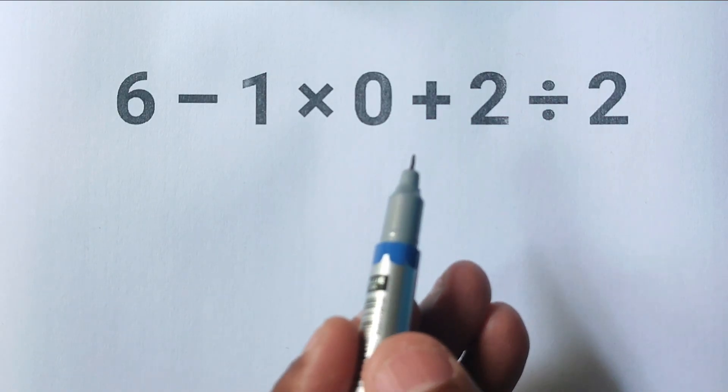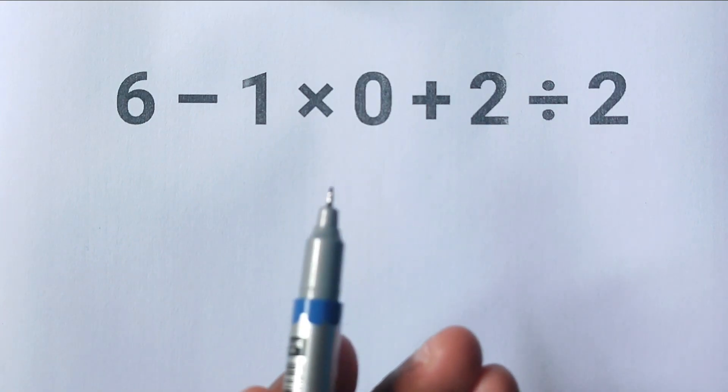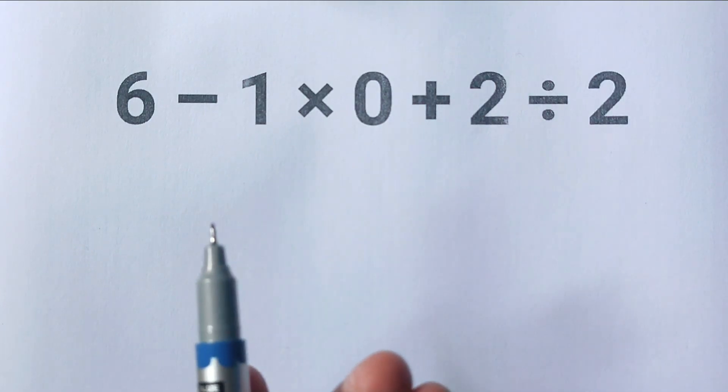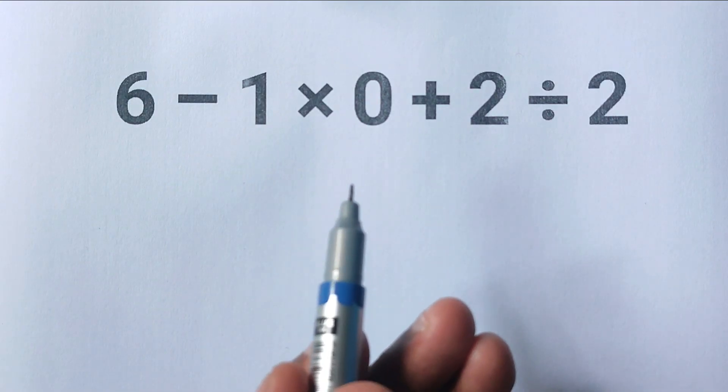Now here's something interesting: a lot of people solve this problem quickly and end up with the wrong answer. Why does that happen? Let's break it down step by step. What most people do is subtract 1 from 6 first.